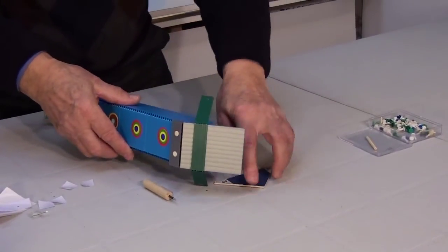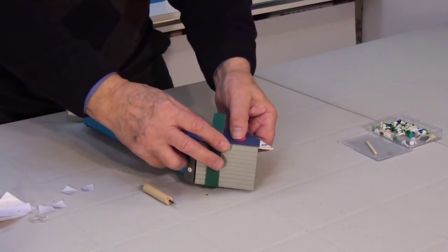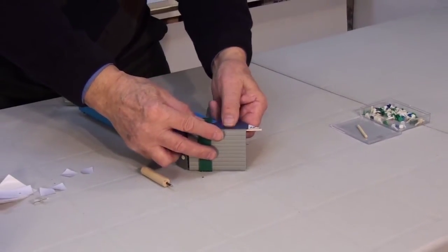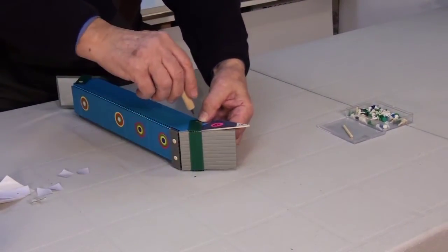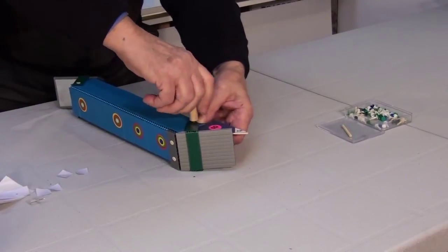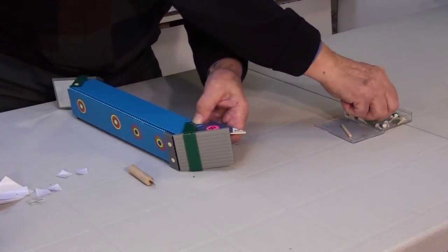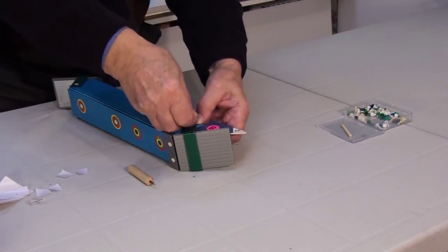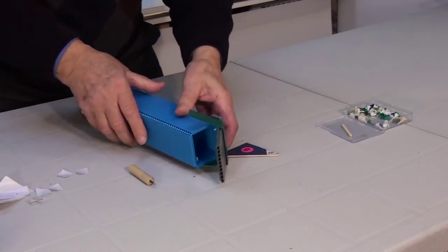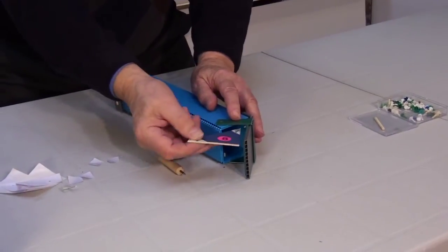Turn the periscope and repeat the same steps here. With the former establish the angle. Make a hole and insert one clip. And again repeat the same on this side.